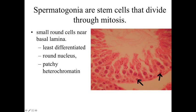Along the base level are going to be spermatogonia, and these are the most undifferentiated of these stem cells — almost generic looking. They're going to be small round cells sitting on the basal lamina, with a nice round nucleus and maybe a little bit of patchy heterochromatin. These cells are going to continue to divide through mitosis. Some of these cells are going to stay as stem cells against the basal lamina, while others, as they divide, are going to be pushed up into the epithelium and start to differentiate, developing into a mature sperm cell.